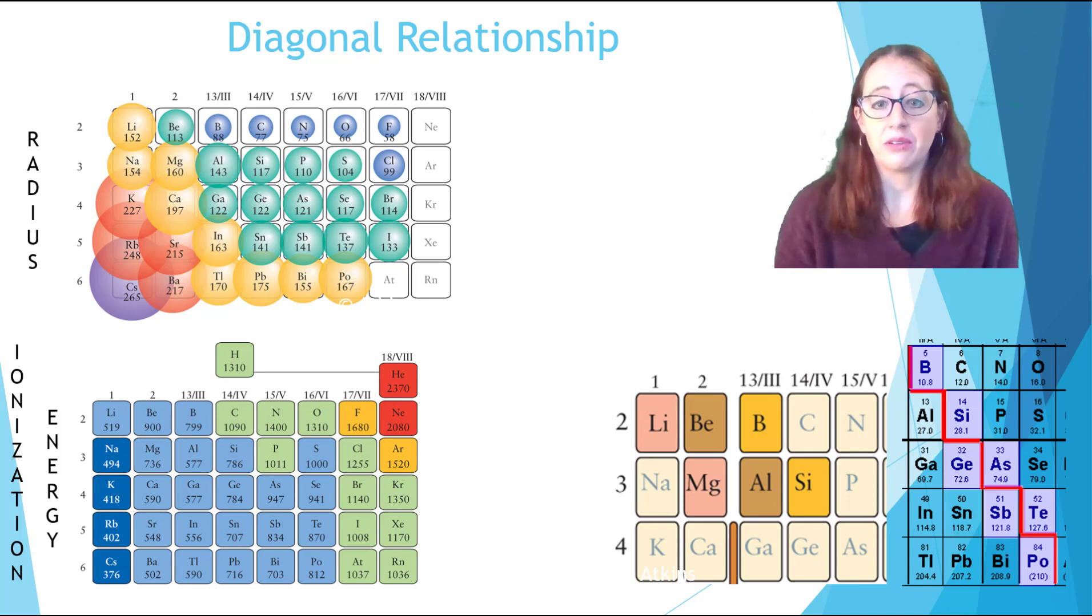So going down and to the right yields a situation where one trend leads to an increase and one to a decrease. This leads to relatively similar values.